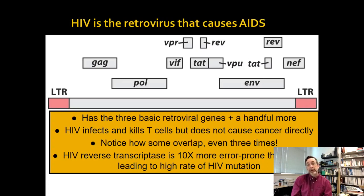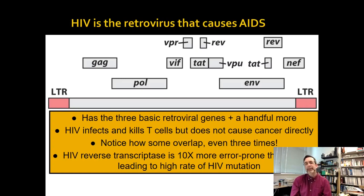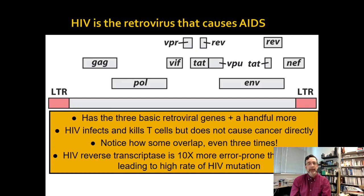HIV reverse transcriptase needs to do its retrovirus thing, but it's 10 times more error-prone than others. Basically, HIV is incredibly sloppy — this means it mutates a lot, and that allows it to get away from the defenses we devise against it. So not only does it infect the defending cell, it also has a huge rate of mutation, which allows it to find ways around the other cells that might respond.